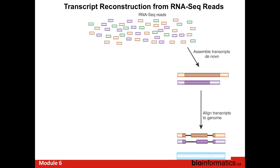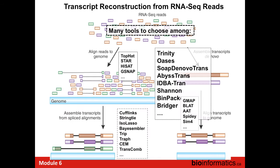Alternatively, we can take the reads and assemble them without a genome. If we have a draft genome or a genome of a related organism, we can align the reconstructed transcript sequences to that genome using a splice aligner, giving us information about where introns and exons lie. There are many tools developed over the last decade for this. You've learned about TopHat, STAR, HISAT, GSNAP; for transcript reconstruction, CuffLinks and now StringTie. Similarly for de novo genome-free assembly, Trinity is one option among many.